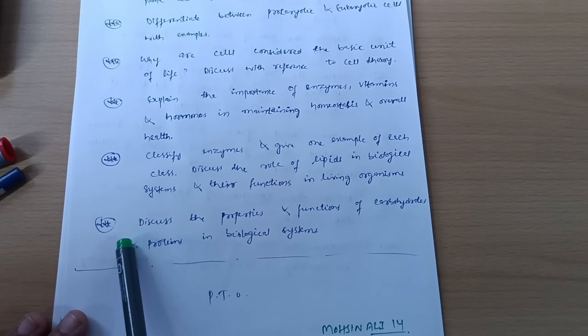Why are cells considered the basic unit of life? Discuss with reference to cell theory. Explain the importance of enzymes, vitamins, and hormones in maintaining homeostasis and oral health. Classify enzymes and give one example of each class. Discuss the role of lipids in biological systems and their functions in living organisms.